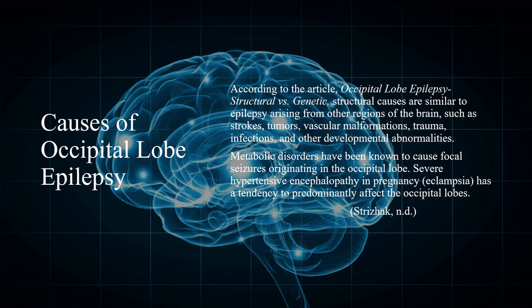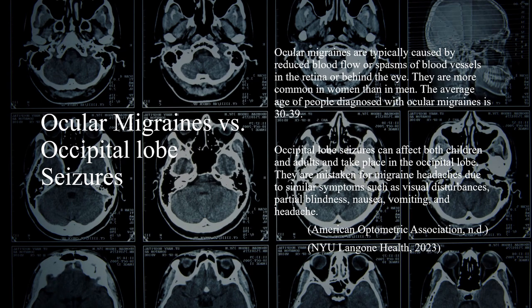Severe hypertensive encephalopathy in pregnancy has a tendency to predominantly affect the occipital lobes. Ocular migraines are typically caused by reduced blood flow or spasm of blood vessels in the retina or behind the eye, and are more common in women than in men, with an average age of diagnosis of 30 to 39. Occipital lobe seizures can affect both children and adults and are often mistaken for migraine headaches due to similar symptoms such as visual disturbances, partial blindness, nausea, vomiting, and headache.